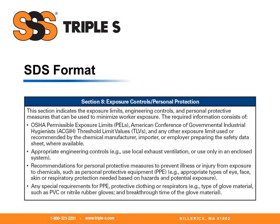Section eight, exposure controls and personal protection. This section indicates the exposure limits, engineering controls, and personal protective measures that can be used to minimize worker exposure. The required information consists of OSHA permissible exposure limits (PELs) and any other exposure limit used or recommended by the chemical manufacturer, importer, or employer preparing the safety data sheet. It will include appropriate engineering controls such as local exhaust ventilation, recommendations for personal protective measures, and any specific requirements for personal protective equipment, protective clothing, or respirators.